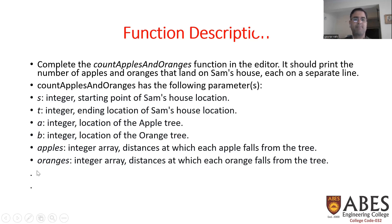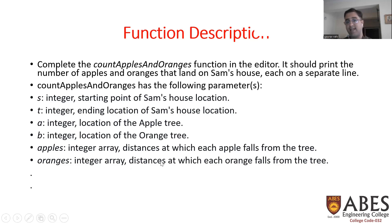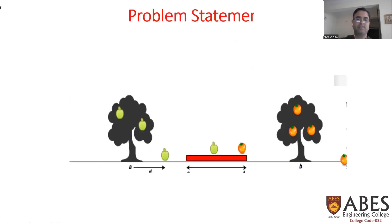There is also an integer array called apples and an integer array called oranges. The apples array contains the distances at which each apple falls from tree A, and the oranges array contains the distances at which each orange falls from tree B.